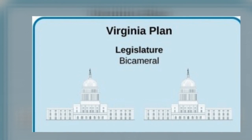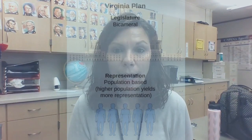Bicameral means two houses. Representation in each house was to be based either upon population or the amount of money that they gave to the central government. The members of the lower house, the House of Representatives, were to be popularly elected — meaning the people in the state would vote for them. Those in the upper house, the Senate, would be chosen by the House, nominated by state legislators.